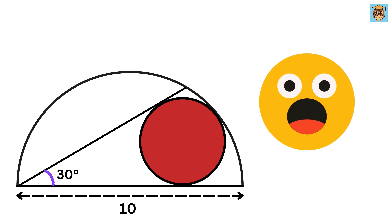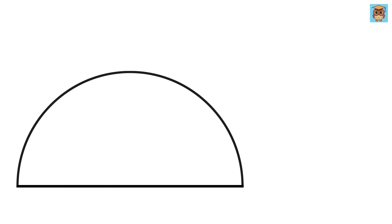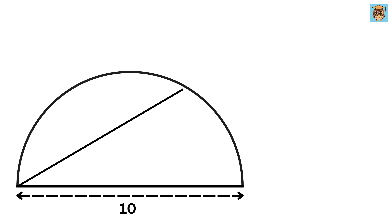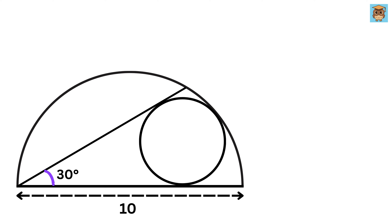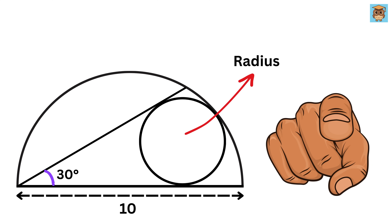This question is a work of art and the solution will blow away your mind. We have a semicircle whose diameter is 10 units. We draw a line from the corner of the semicircle making an angle of 30 degrees. Then we draw a small circle such that both the diameter of the semicircle and this line are tangents to this circle, and this circle just touches the semicircle internally. Our job is to find the radius of this circle.